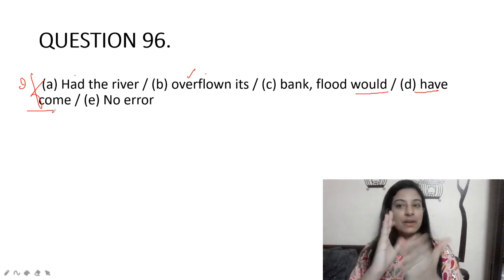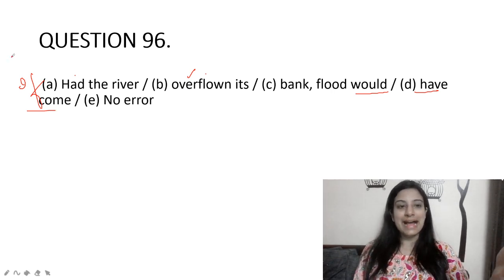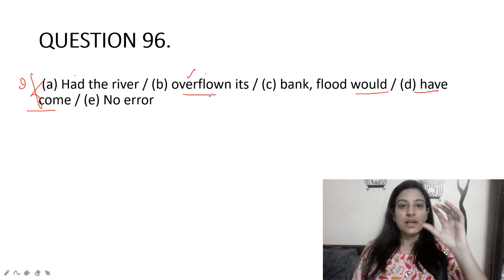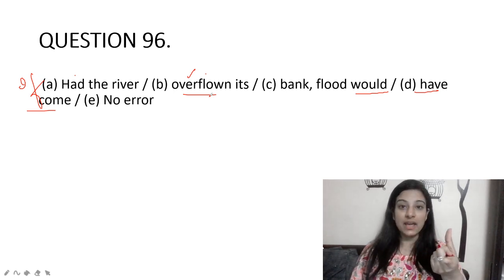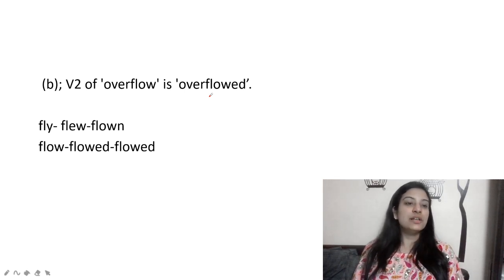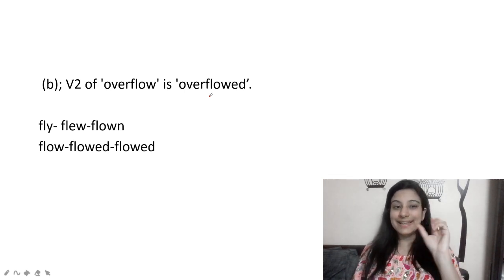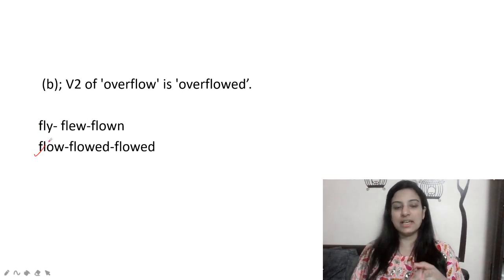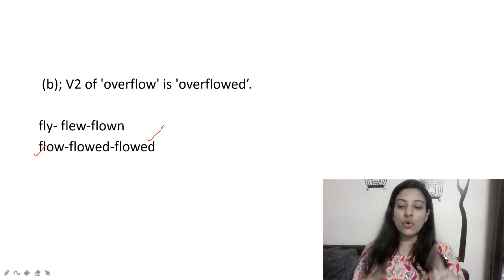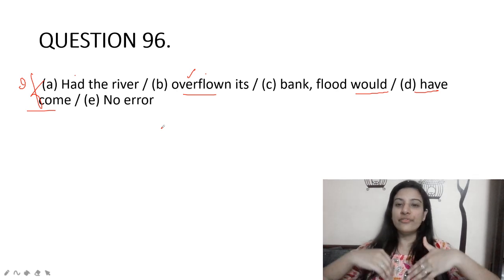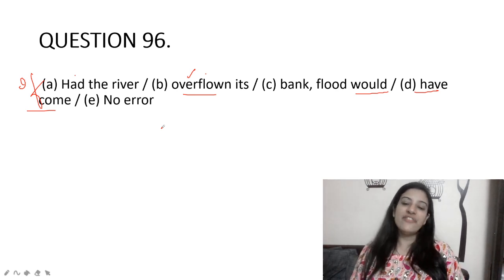In the second part we have present perfect, and in the first part we have past perfect — that is the third conditional rule. 'Overflown' is wrong because 'flown' is the V3 of 'fly' — fly, flew, flown. But we are talking about water flowing, not flying. The V3 of 'flow' is 'flowed,' so it should be 'overflowed.' The correct sentence: 'Had the river overflowed its banks, the flood would have come.'